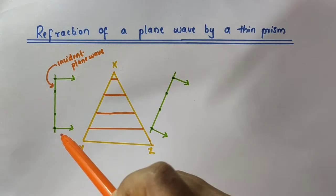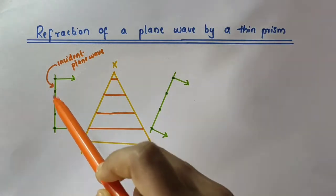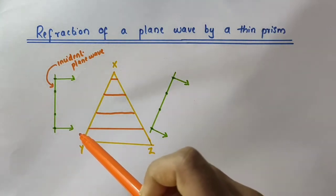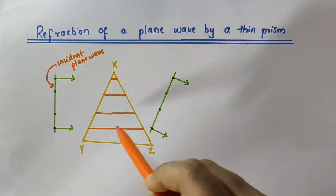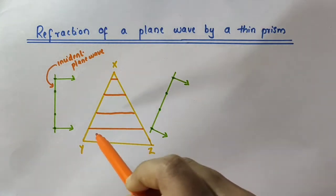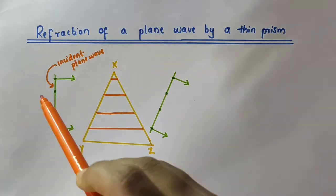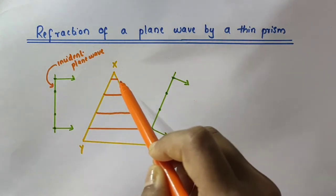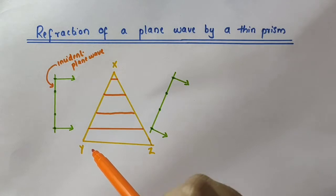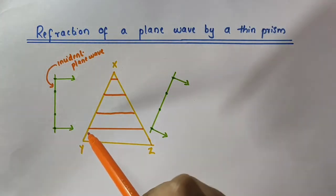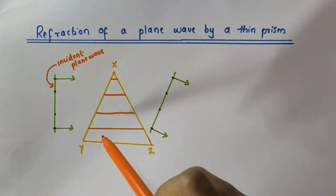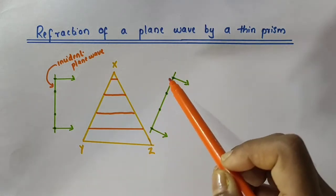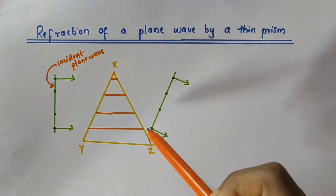The lower portion of the incoming wave front — this is the incident plane wave — has to travel through the greatest thickness of the glass prism. And the upper portion travels through the least thickness of the glass prism. Since the lower portion has to travel through the greatest thickness, it will get delayed, resulting in a tilt in the emerging wave front.